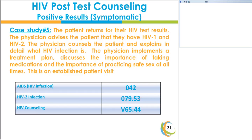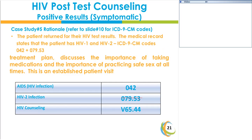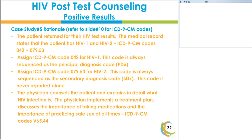The rationale: The documentation states the patient has HIV-1 and HIV-2 infection. Two codes are needed to accurately reflect this condition — 042 and 079.53 — and they must be sequenced in this order. Code 079.53 would never be reported as the principal or sole diagnosis. V65.44 is the third code for counseling.